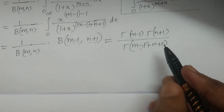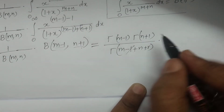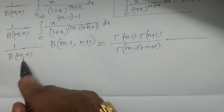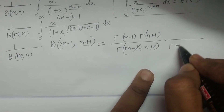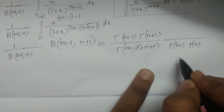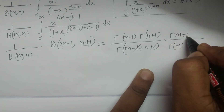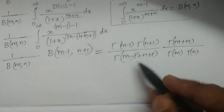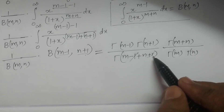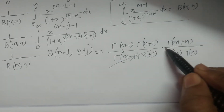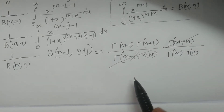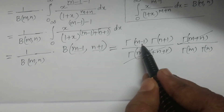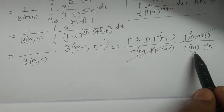After cancellation, the remaining terms are gamma(m minus 1) times gamma(n plus 1) divided by gamma(m) times gamma(n). Comparing: gamma(m minus 1) versus gamma(m) — the highest factor is m. And gamma(n plus 1) versus gamma(n) — the highest factor is n plus 1.